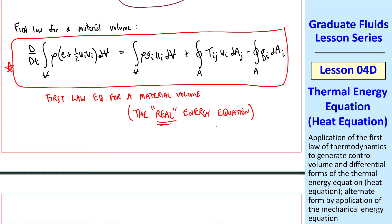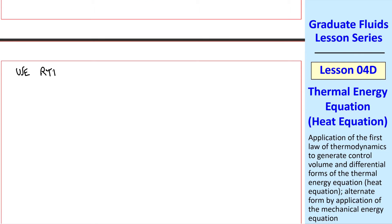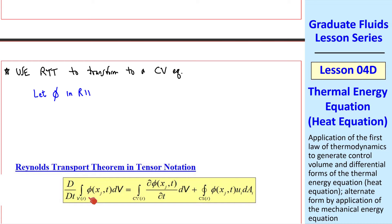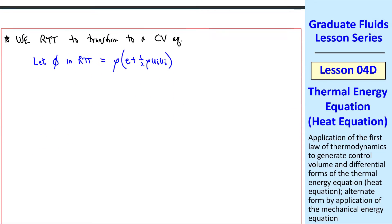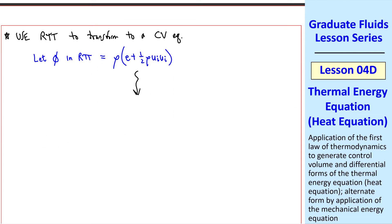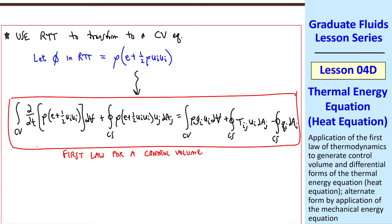Now we'll do some work on this equation, similar to what we did for mass and momentum. Namely, we'll use the Reynolds transport theorem to transform this into a control volume form. We let our variable phi in the general Reynolds transport theorem from a previous lesson equal rho times E plus one-half rho ui ui, which is the term in here which we had called phi in the Reynolds transport theorem. I'm not going to go through all the algebra since we've done it a number of times, so I'll use my squiggly arrow to mean lots of algebra. Our result is shown here with three control surface integrals and two control volume integrals. This is our first law for a control volume.